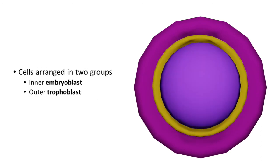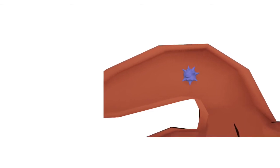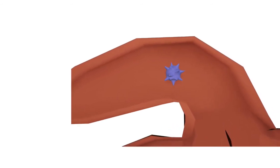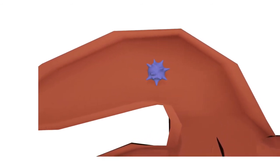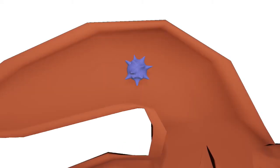Within the morula, the cells come to be arranged in two groups: the inner group called embryoblasts and the outer covering cells called trophoblasts. And remember, all this happens when the embryo is still covered by zona pellucida.